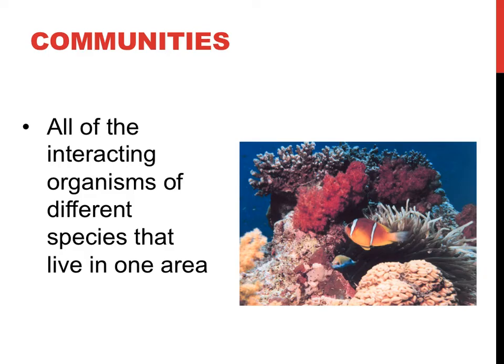A community would involve all the living components of the environment — that is, many species — in one particular area of the world. In the community level of ecology, scientists could try to determine how the fish and the anemone interact with one another, as exhibited in this picture. Predator-prey and parasitic relationships that you might be familiar with are some ecology terms involving this topic.